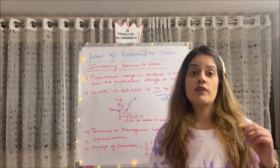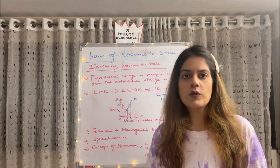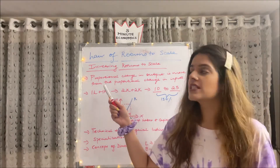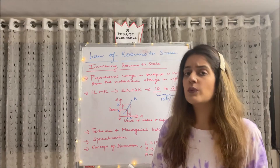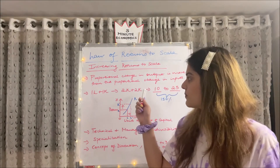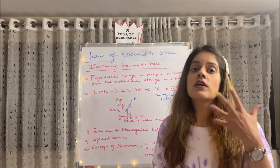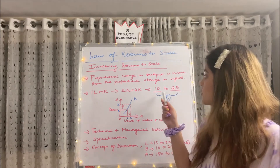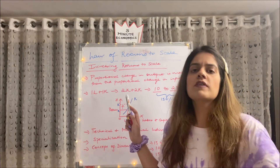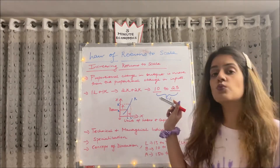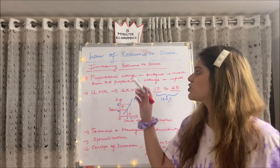Moving ahead to our first type, which is increasing returns to scale. The term 'increasing' clearly shows that the increase in output is more than the proportional increase in input. Proportional change in output is more than the proportional change in input. For example, we have one labour and one capital, and we double it to two labour and two capital. Initially our output was 10 units, but after doubling the inputs our output has reached 25 — not just 20 as we might have expected. This is the case of increasing returns to scale, where output increases by 150 percent while inputs only doubled.